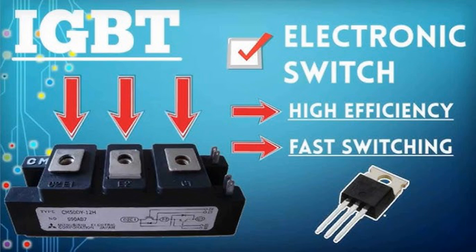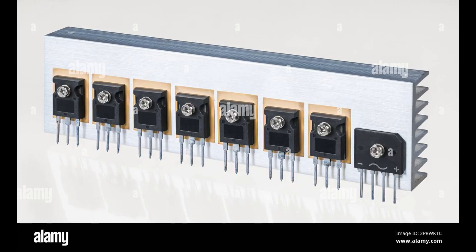Applications of IGBT in detail: Due to its ability to handle high power with high efficiency, the IGBT is widely used in various power electronics applications. Motor drives — variable frequency drives (VFDs): IGBTs are extensively used in industrial motor control applications such as pumps, fans, and compressors. VFDs control the speed of electric motors by varying the frequency of the power supplied to the motor. Electric traction — in electric trains and trams, IGBTs control the motor speed and torque by converting DC from the overhead wires into AC, allowing for efficient traction control.